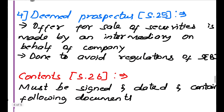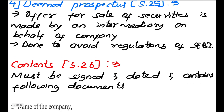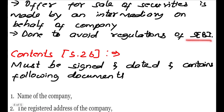The next type is Deemed Prospectus. This is not issued by the company directly. Instead, it is an offer for sale of securities by an intermediary on behalf of the company. When an intermediary offers the sale of securities to the public on behalf of the company, it is called a Deemed Prospectus. It is done to avoid the regulations of SEBI.